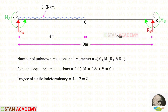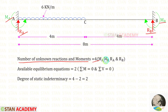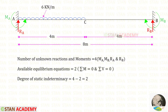Now let us find the degree of static indeterminacy. In this beam the number of unknown reactions and moments are 4: the moments MA and MB, and the vertical reactions RA and RB. The available equilibrium equations are 2. The degree of static indeterminacy is equal to 4 minus 2, which gives us 2.